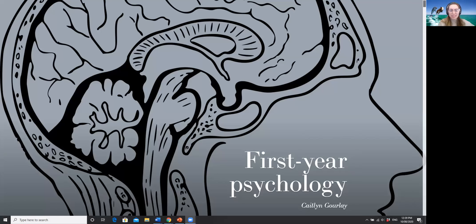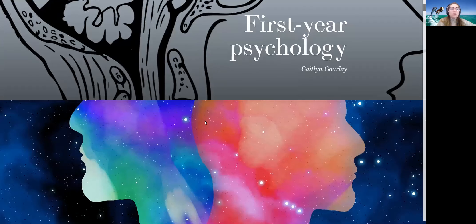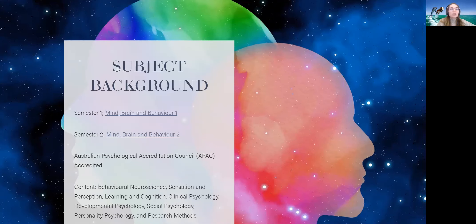Today I'm proposing two large online first-year psychology subjects. These will be equivalent to but separate from the core face-to-face first-year subjects, Mind Brain and Behavior One and Two. These are two of the largest undergraduate psychology subjects at the university, with up to 2,000 student enrollments per semester. They are accredited by the Australian Psychological Accreditation Council, meaning they meet professional standards for this year level and are a prerequisite for postgraduate studies in clinical psychology.